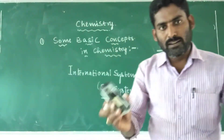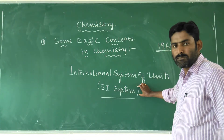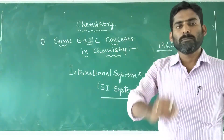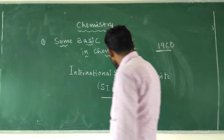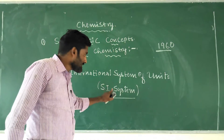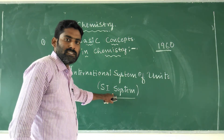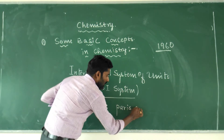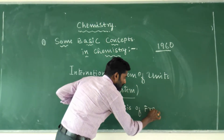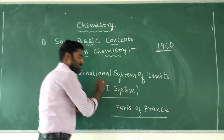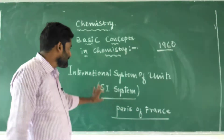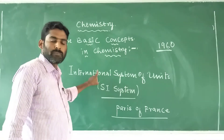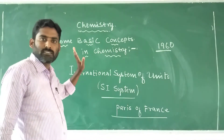Across the world, the SI system was standardized for the measurement of physical properties of matter. This SI system was established in Paris, France. The SI system — the International System of Units — is a standard system of measurement of properties of matter.